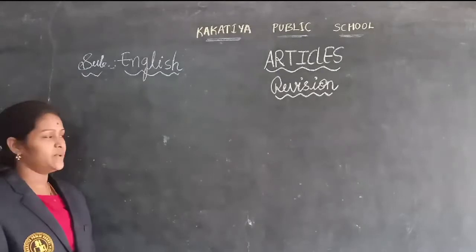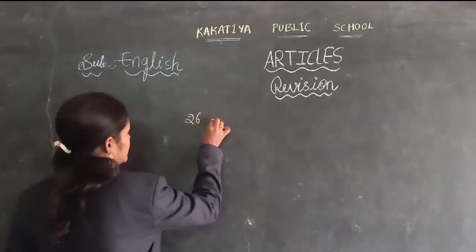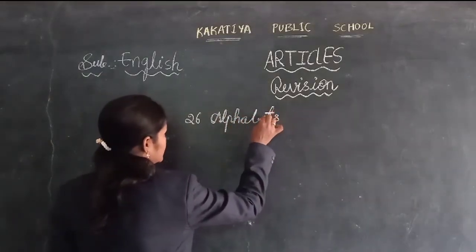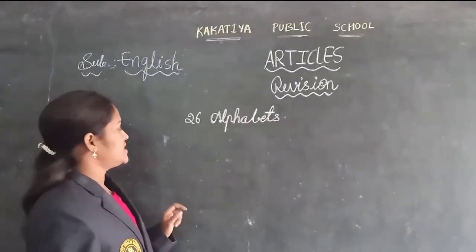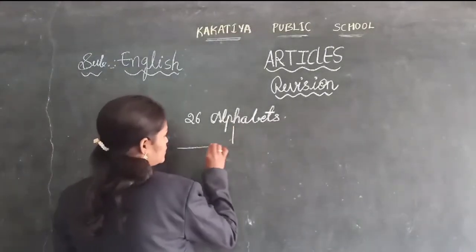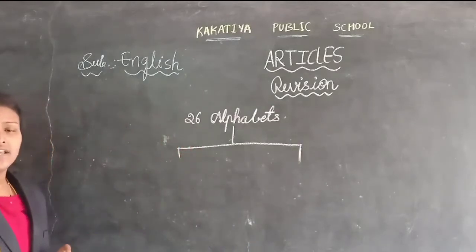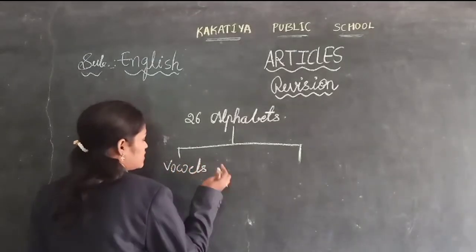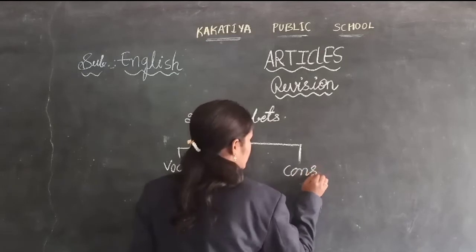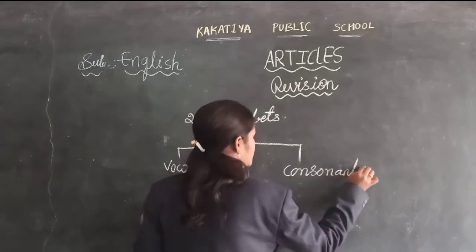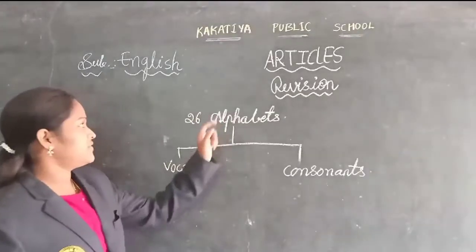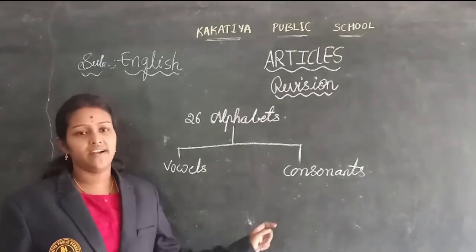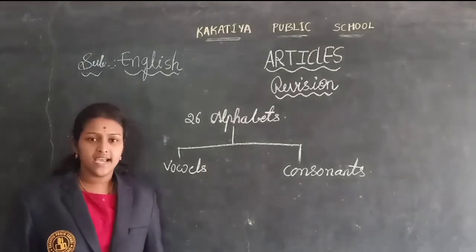In English, how many alphabets are there in total? There are 26 alphabets in English. These 26 alphabets are divided into two types. What are they? Vowels and consonants. In the previous video also, when we discussed about the articles topic, I told you that alphabets are divided into two types: vowels and consonants.